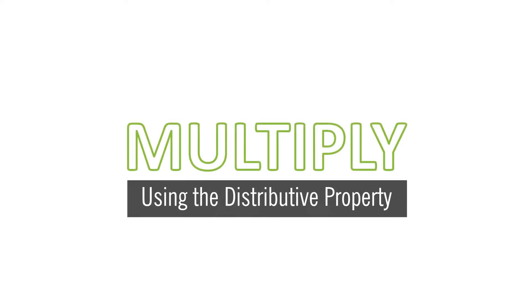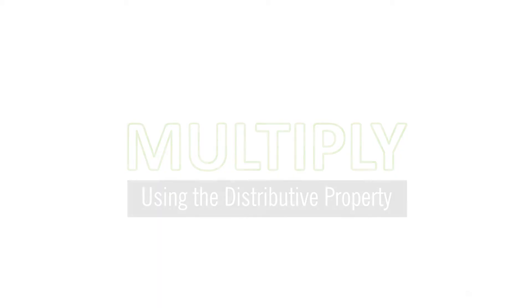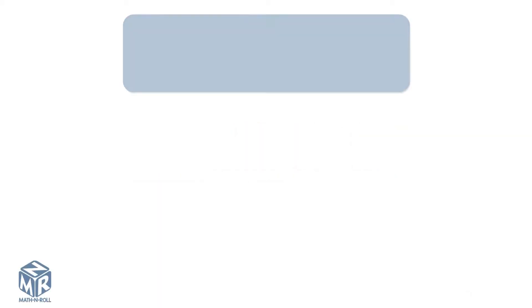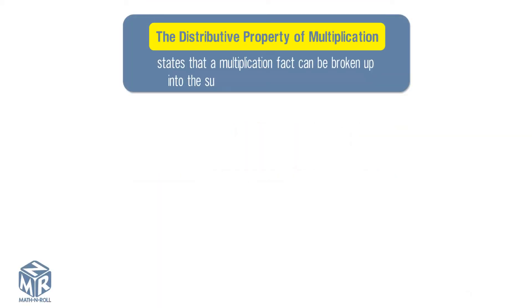Multiply using the distributive property. Let's recall, the distributive property of multiplication states that a multiplication fact can be broken up into the sum of two other multiplication facts.